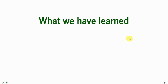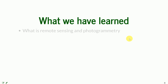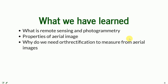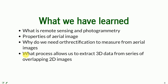Combining everything together, what have we learned today? We learned the principles of remote sensing and photogrammetry. We also learned about aerial imagery and its properties and kinds. We know now why we need orthorectification to measure from aerial imagery, and about the process that allows us to extract three-dimensional data from a series of overlapping 2D images.